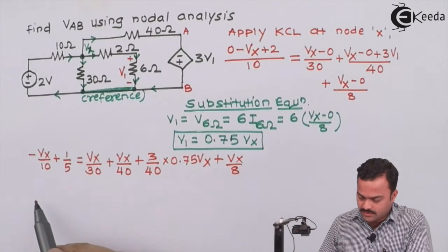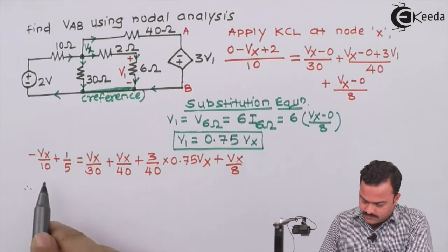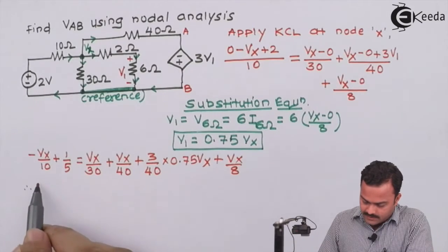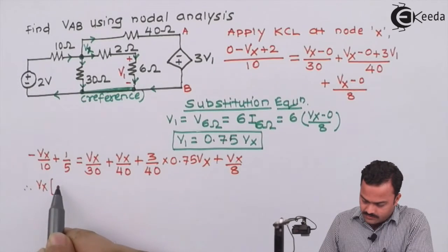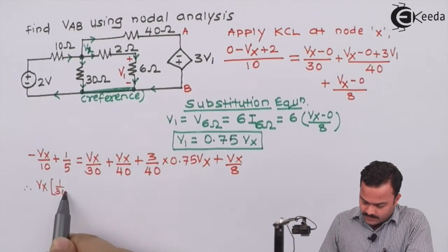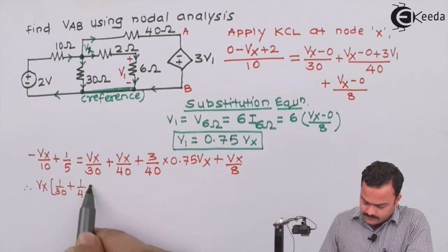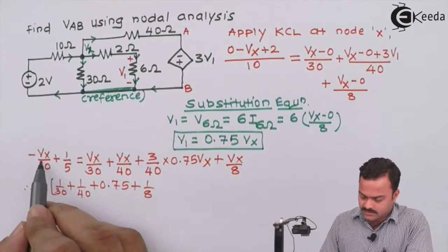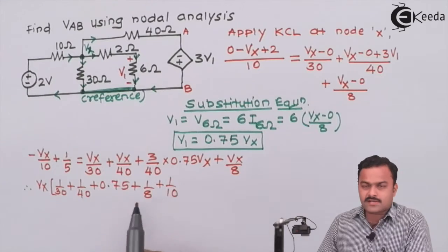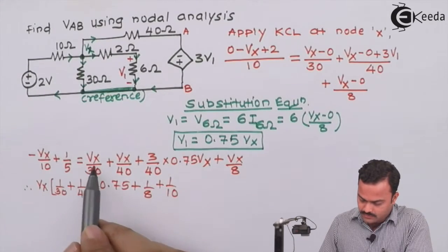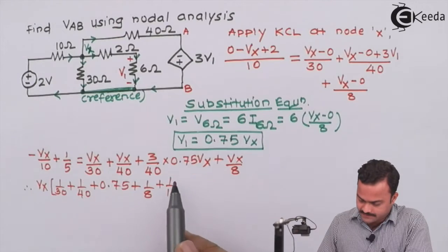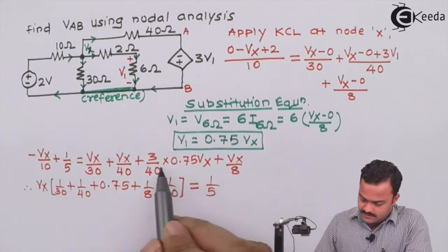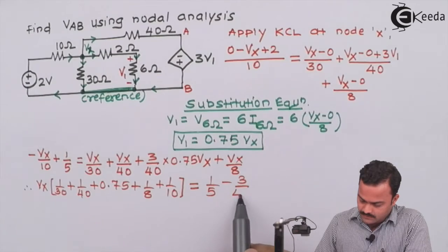Let's take all Vx terms together and all constants together. So it is better to take this Vx on this side and this constant on left hand side. So ultimately we will get an equation where Vx will have the coefficient 1 by 30 plus 1 by 40 plus 0.75 plus 1 by 8. Do not forget to take this Vx on this side. So plus 1 by 10. Equal to 1 by 5. Already there. This will go on this side. So minus 3 by 40.